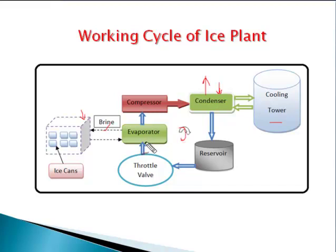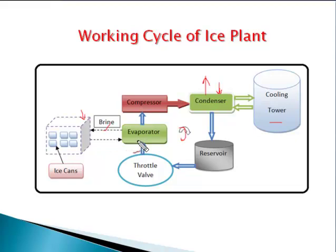Now we will look at the secondary cycle, which is completed by the brine solution. This is also known as the secondary refrigerant. The brine solution enters the chilling tank from the ice cans, absorbs heat, and then that hot brine solution enters into the evaporator. There, the primary refrigerant absorbs the heat from the brine solution, making it cold. The cold brine solution then enters back into the chilling tank. This secondary cycle uses the brine solution as the working or cooling medium.